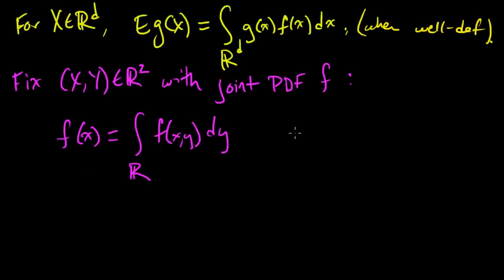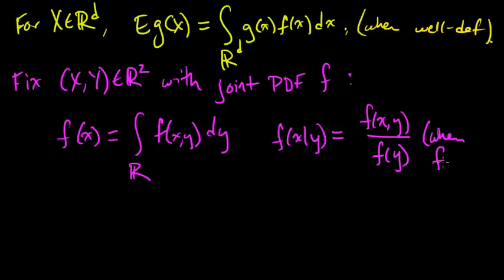The conditional, and you could do the same thing for y. The conditional PDF is written this way, f of x given y, and it's just equal to the joint PDF divided by the PDF of y. So this just looks exactly like the case for PMFs. And this is when f of y is strictly positive. Otherwise we get zero on the bottom and everything's infinite, so then things are bad, it's undefined.